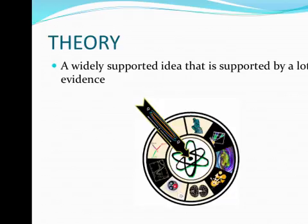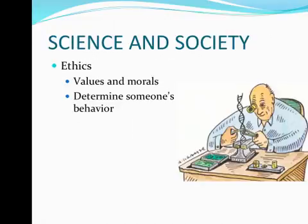Sometimes the results of research or experiments become a theory. A theory is a widely supported idea that is supported by a lot of evidence. In other words, it's been tested multiple times by different people and the same results always occur. When we look at science and society, we have to look at the ethics, morals, and behaviors that scientists and society have when considering science.